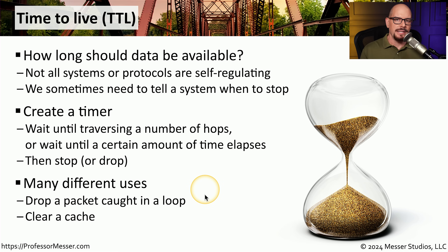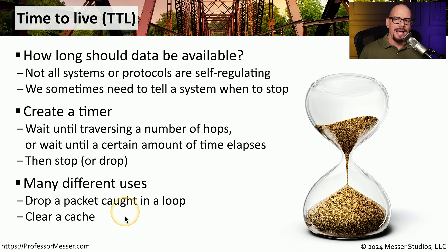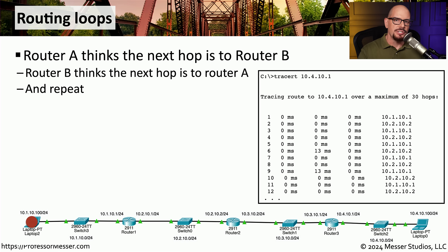There are many different cases for a time to live. One is a packet that is constantly looping between different routers — we might want that packet automatically dropped if the loop occurs a certain number of times. Another example is clearing a cache, where we access a website, store it in a cache, and that cache is only available for the next 60 seconds or a number of minutes. When that timer hits zero, the cache is cleared, and the next time that website is accessed, you would go all the way out to the site to bring that information back, at which point it is placed in the cache and another timer starts. Another example of using TTL to stop looping traffic is through a routing loop.